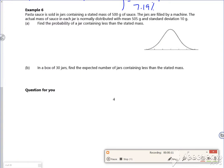So it says a pasta sauce is sold in jars containing a stated mass of 500 grams. The jars are filled by a machine. The actual mass is normally distributed with a mean of 505 and a standard deviation of 10. Find the probability that a jar contains less than the stated mass.